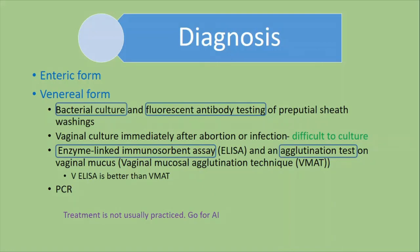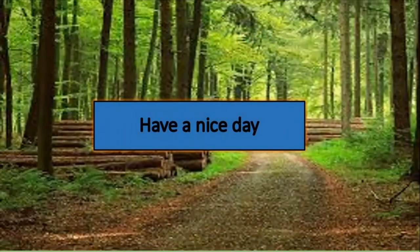For treatment, antibiotics can be used, but management practices are generally preferred and more practical. These include removal of infected bulls, switching to artificial insemination instead of natural service, and implementing management corrections. These are the key points about Campylobacter infections in animals. Thank you all, have a nice day.